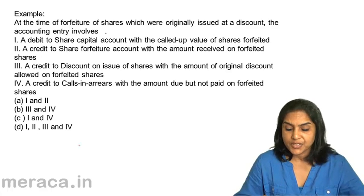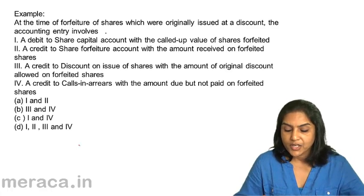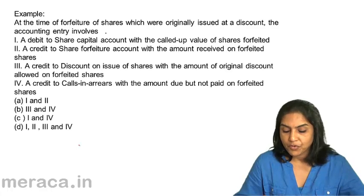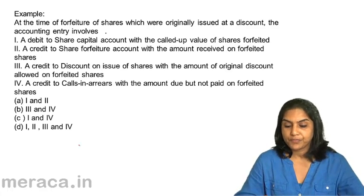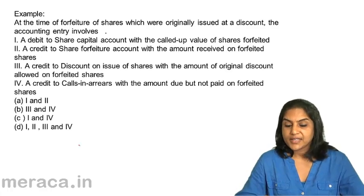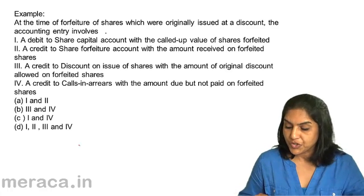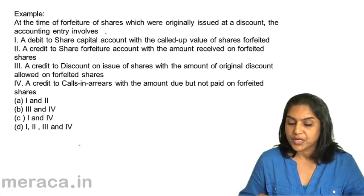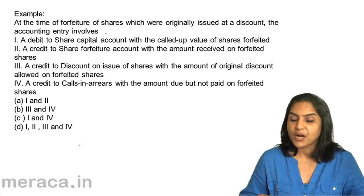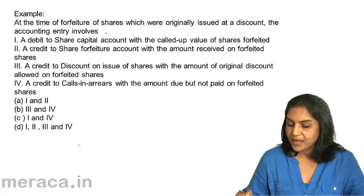The options are: A — 1 & 2, B — 3 & 4, C — 1 & 4, D — 1, 2, 3 & 4. At the time of forfeiture of shares which were originally issued at a discount, we need to identify the correct accounting entry.